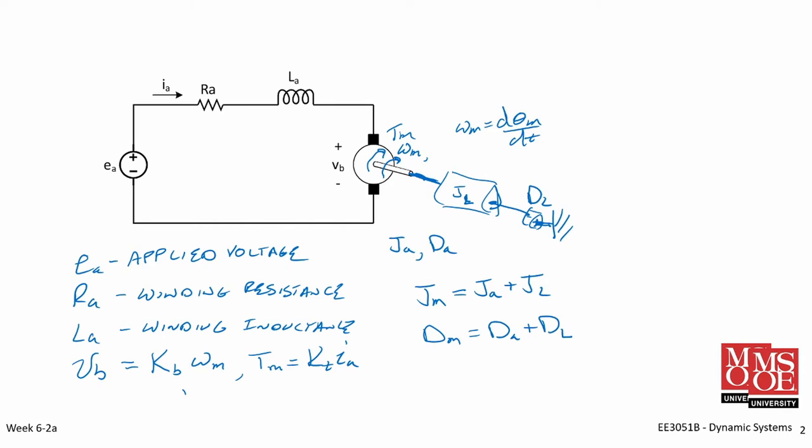We can now derive an electrical equation for the motor, and then we're going to derive the mechanical equations. These two sets of equations will allow us to obtain the transfer function for the DC motor.